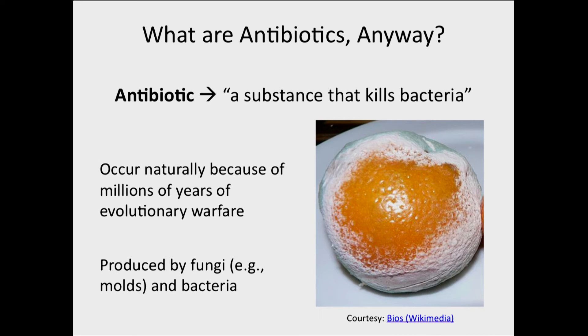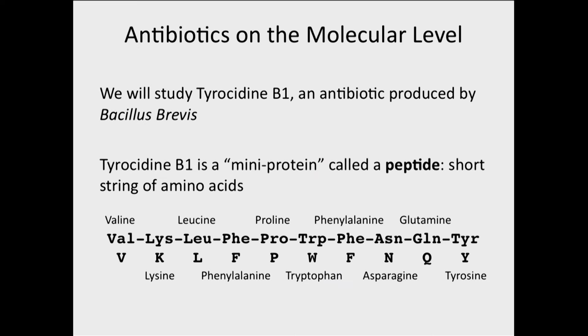One example would be a bacterium called Bacillus brevis, and that's the bacterium that we're going to study today. It produces an antibiotic known as tyrosidine B1. So what is tyrosidine B1 on the molecular level? It's a mini-protein called a peptide.